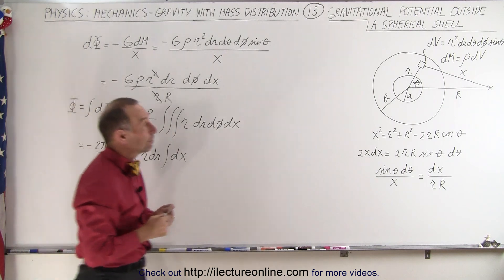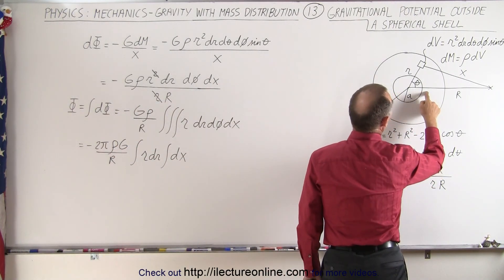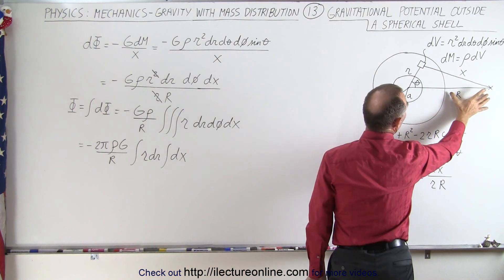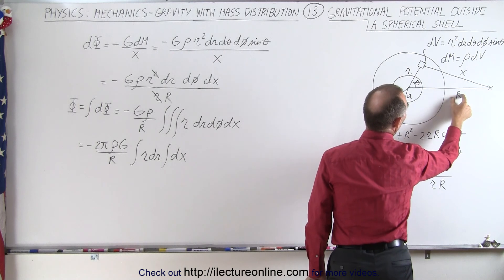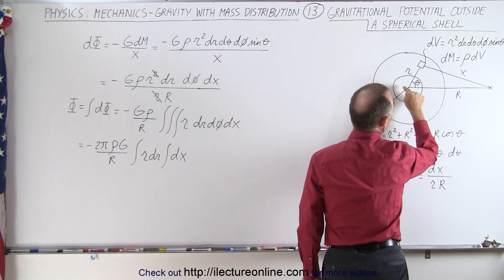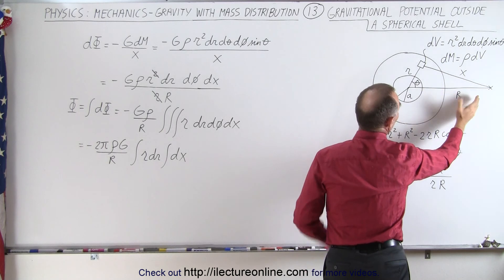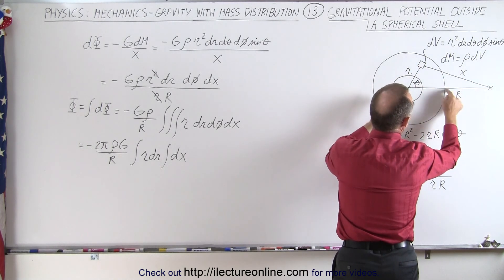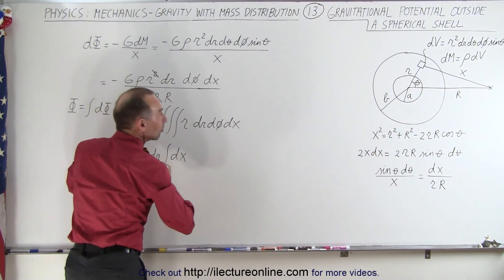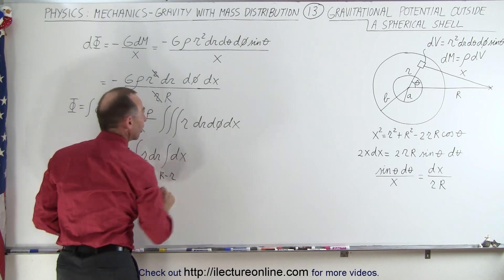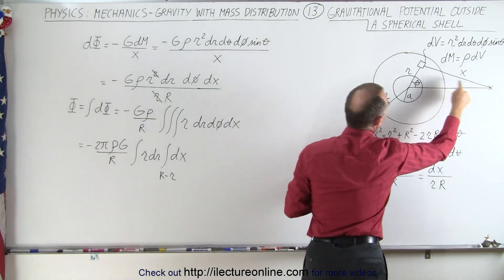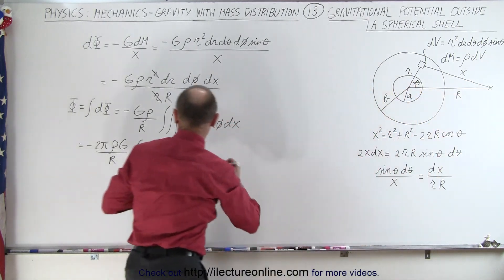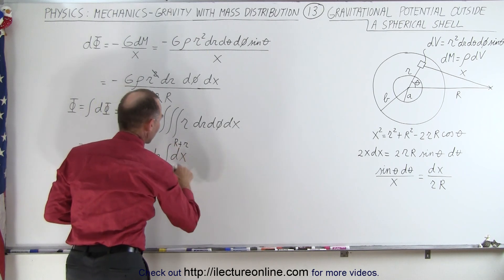For the dx integration, we need the limits. The closest approach to our location is R minus little r, since r varies from the inner to outer radius. The maximum distance x can have is on the other side, which is R plus r. So x is integrated from (R − r) to (R + r).